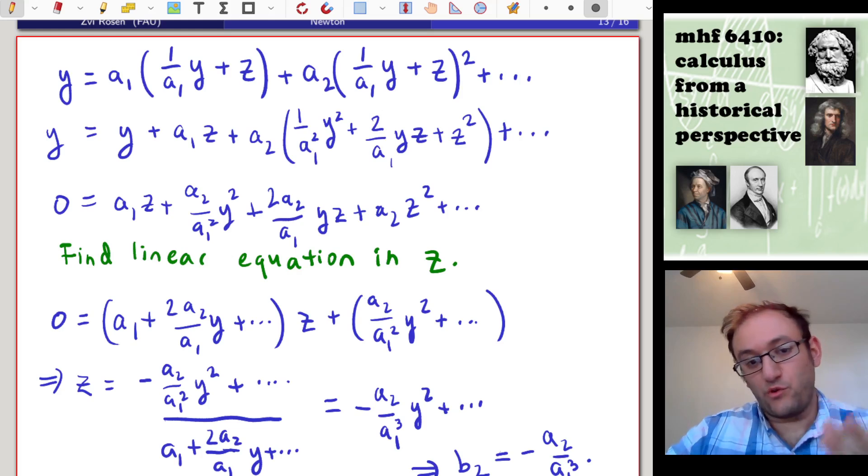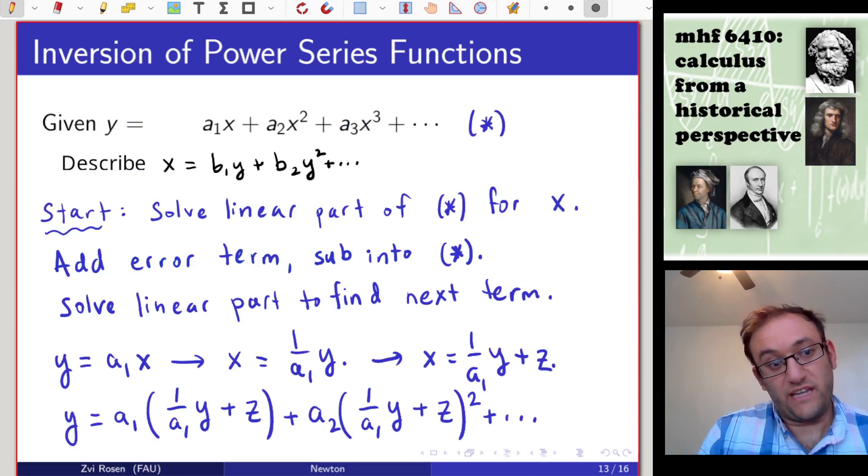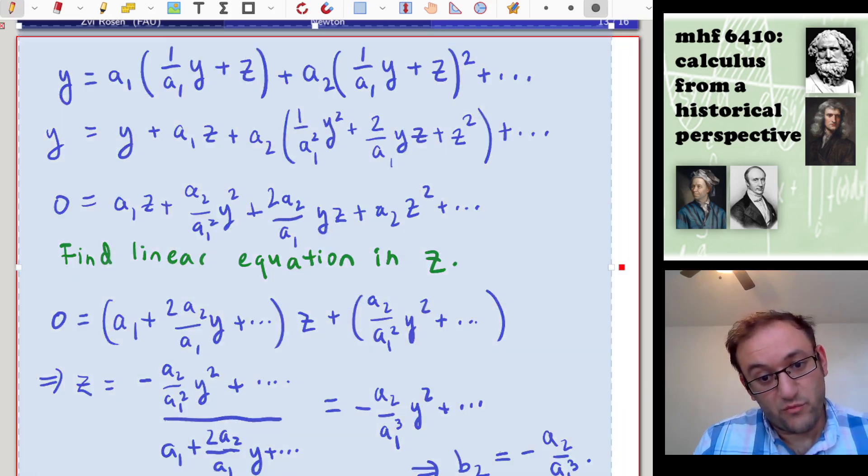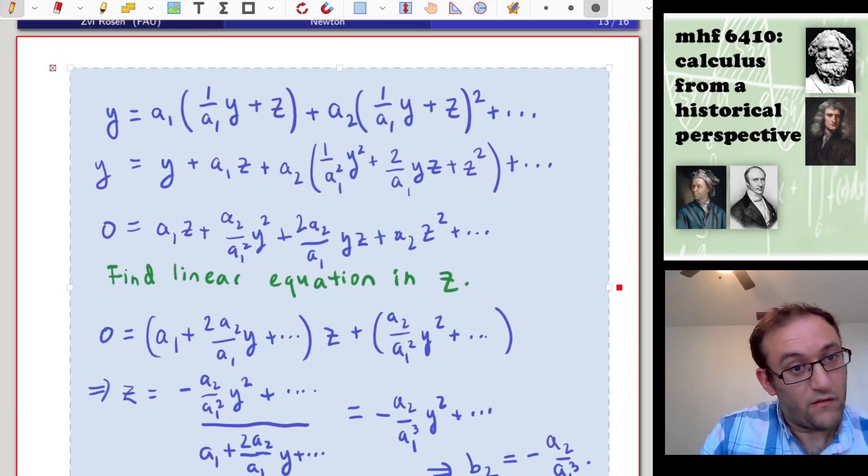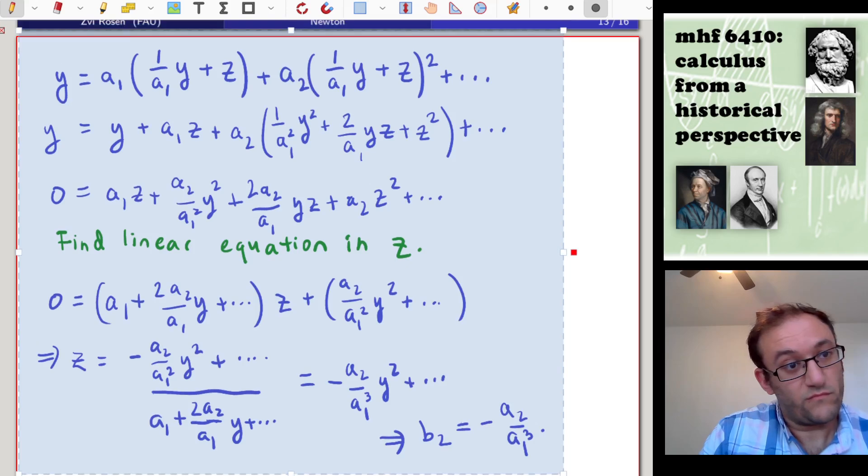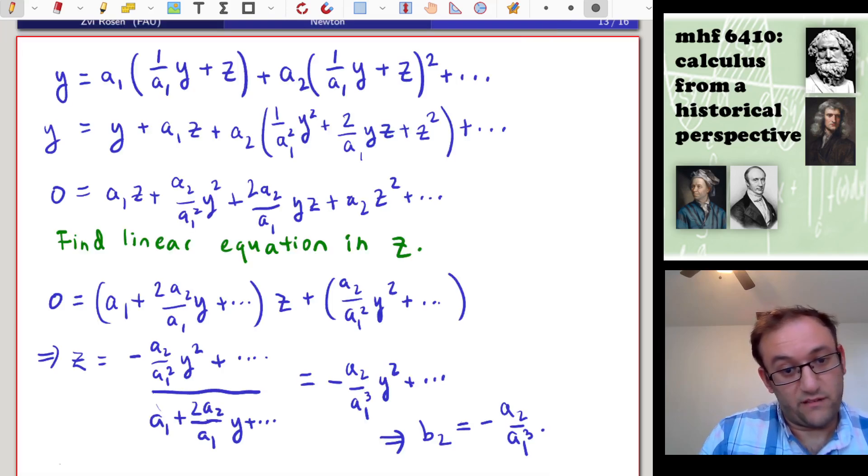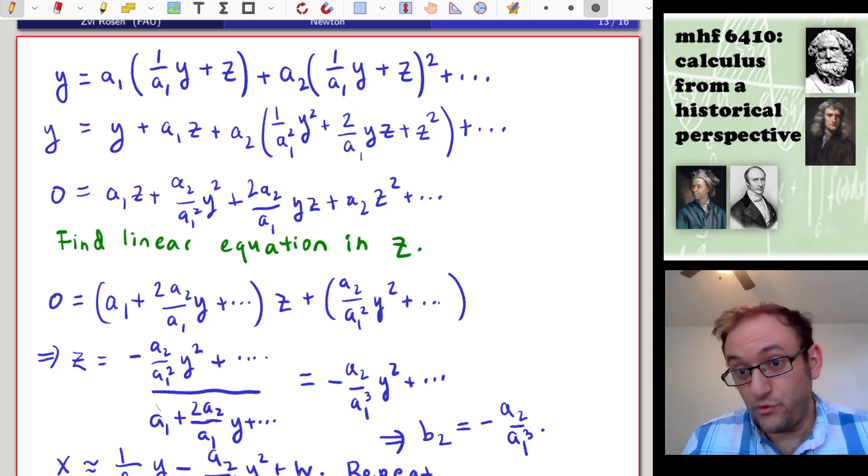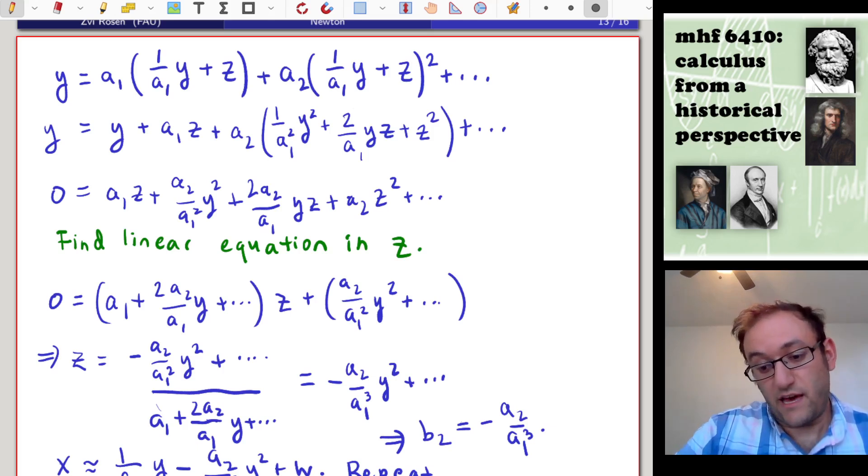That's kind of how you go about this. Then you would go back to your original equation and plug in our new approximation: x is approximately 1 over a1 y minus a2 over a1 cubed y squared plus some new error function w. Then you would just repeat. That's how Newton would invert series functions.